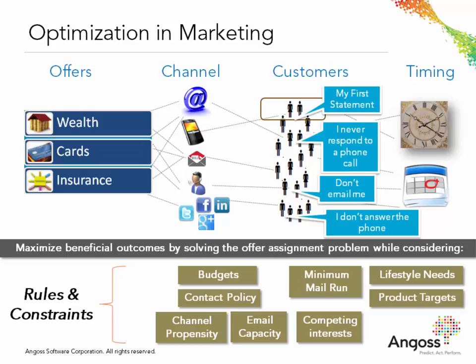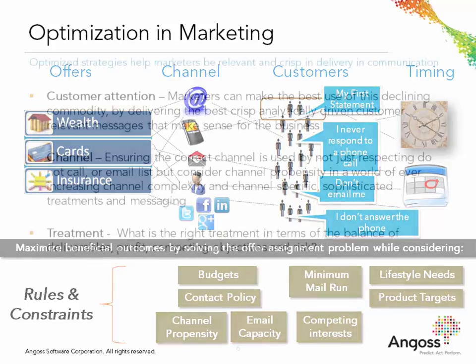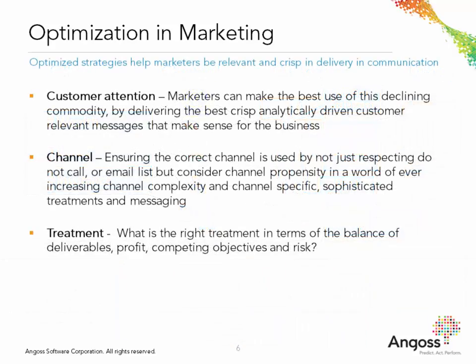Constraints like marketing budgets, product targets, contact policy, making sure suppression lists are adhered to, and also the capacity of fulfillment houses that you may be using — the number of emails that are contracted to go out daily, for example. Optimization leverages everything known and predicted about customers to ensure that marketers speak appropriately to them, limiting the level of perceived interruption by minimizing contacts and maximizing message relevancy. In other words, optimization helps organizations to respect the limited resource of customer attention.